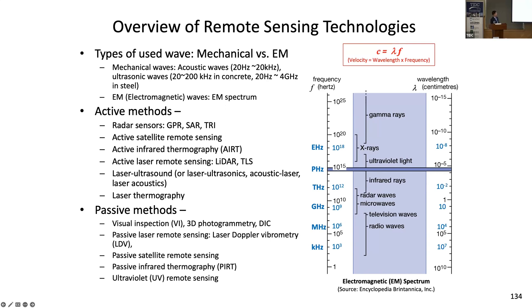There are different kinds of ways we can use for remote sensing. You can use mechanical waves or electromagnetic waves. Civil engineers are more familiar with mechanical waves, but remote sensing takes advantage of electromagnetic waves. Looking at the spectrum — which is not so commonly seen by civil engineers — we are talking about microwaves, visible light, UV, IR, and at higher frequencies, X-rays or gamma rays.